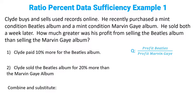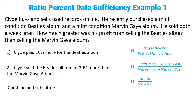The first thing we always do is figure out what we've been asked and write it down. In this case, we need the profit that he made from the Beatles over the profit of Marvin Gaye. Profit has a very simple formula that the GMAT will expect you to know, which is revenue minus cost. So what you've really been asked is the Beatles revenue minus the Beatles cost, over the Marvin Gaye revenue minus the Marvin Gaye cost — or more mathematically: BR minus BC over MR minus MC.